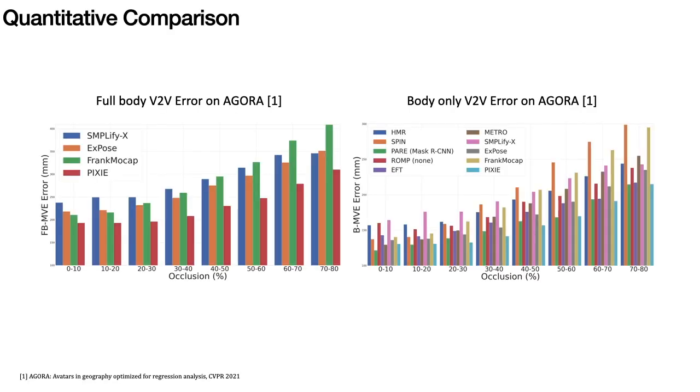On the Agora dataset, PIXI outperforms published methods that regress expressive bodies.